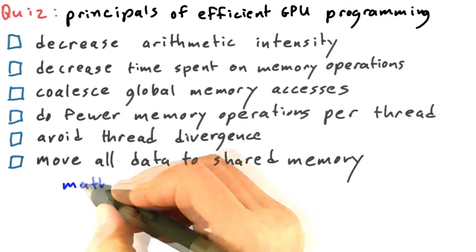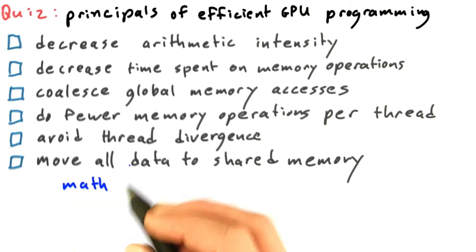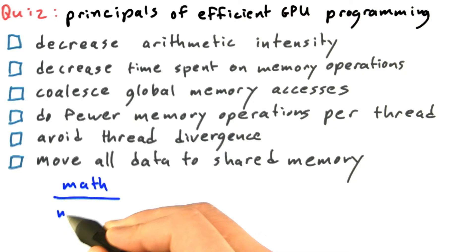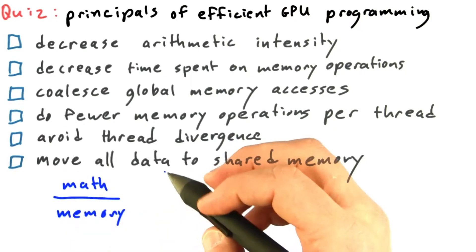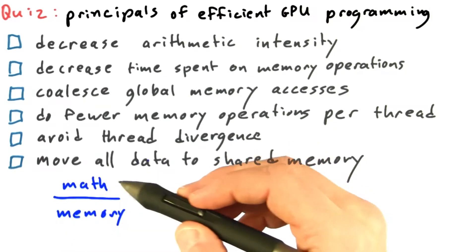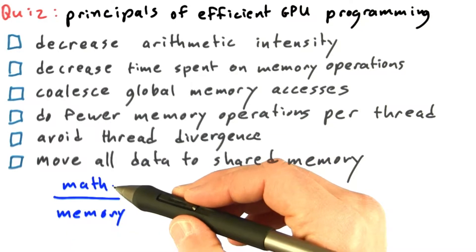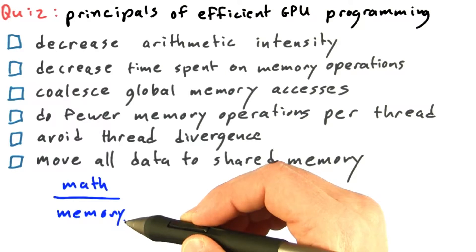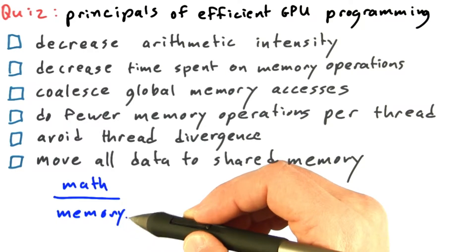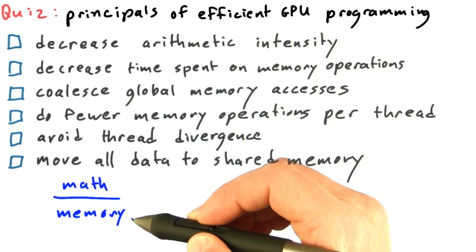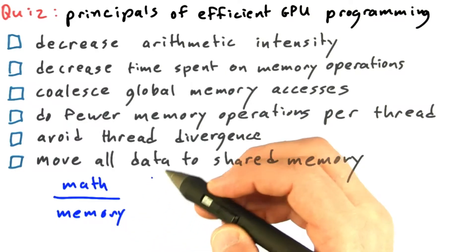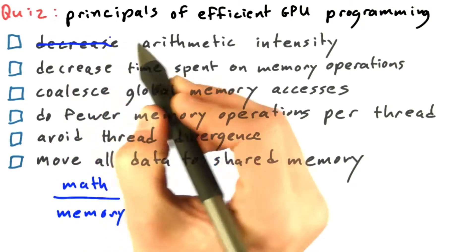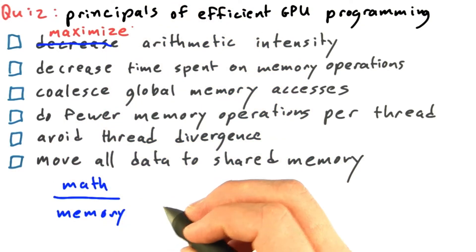Arithmetic intensity is basically defined as the amount of math per memory. Or to be a little more precise, the amount of useful work, which is essentially math operations, that we do for the amount of time that we spend doing memory accesses. So we want to maximize arithmetic intensity, not minimize it.